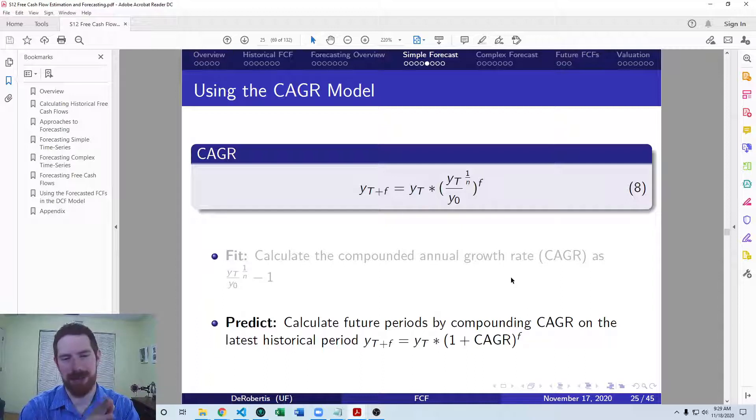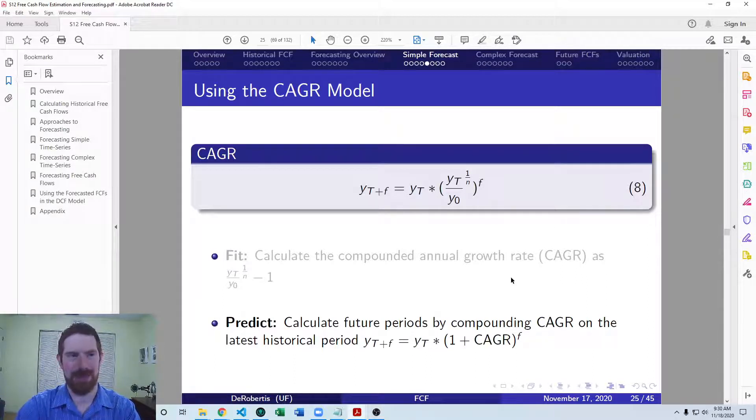So once you have that CAGR fitted, then you can predict the future using it. We're just going to use the standard growth formula, where you take whatever the last period was and you multiply by one plus the growth rate, compounded at however many periods you want to forecast into the future. If you're forecasting one period into the future, it's just times one plus the growth rate. If you're going two periods in the future, it's times one plus the growth rate squared, and so on. That's how you calculate the CAGR model.